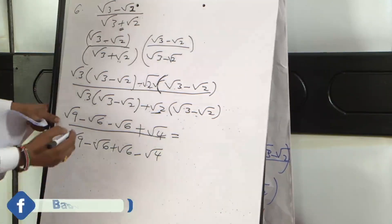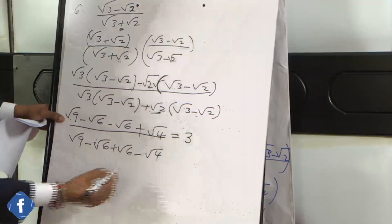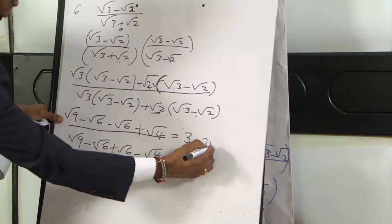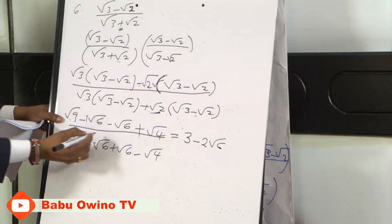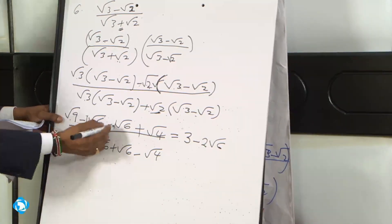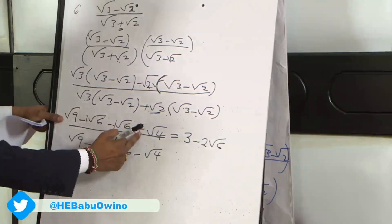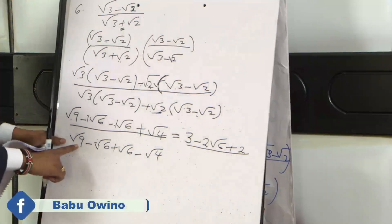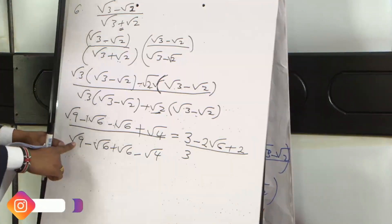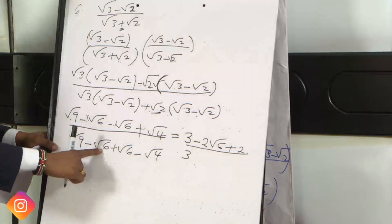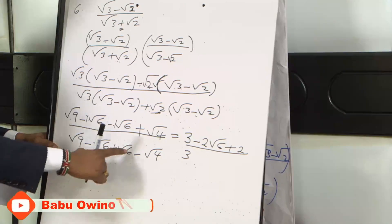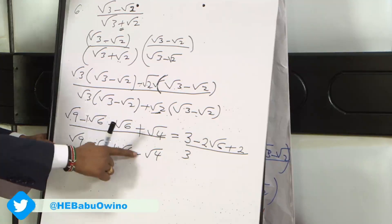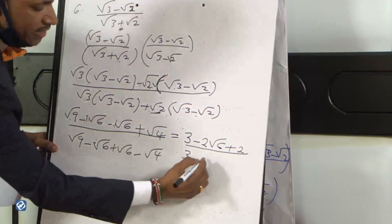From here, root 9 is 3. Then minus root 6 minus root 6: you pick the coefficients 1 and 1, add them, and maintain root 6, giving minus 2 root 6. Then plus root 4 — square root of 4 is 2. Divide by: root 9 is 3. Then minus root 6 plus root 6 is zero, so we don't write the zero. Then minus root 4 — root 4 is 2, so it is minus 2.